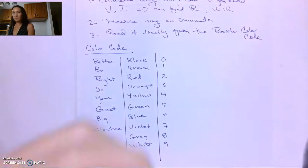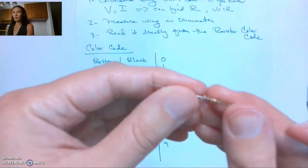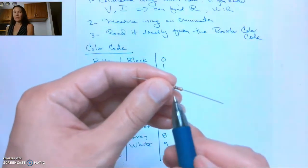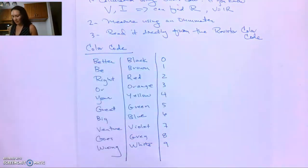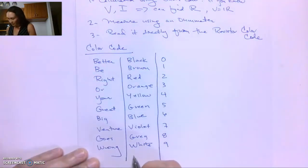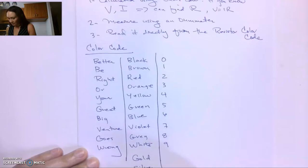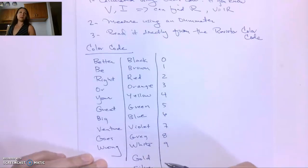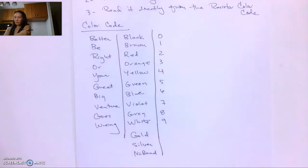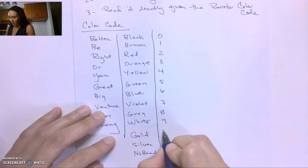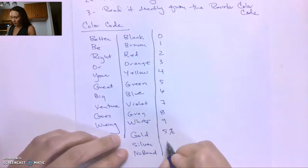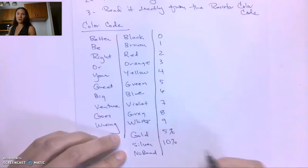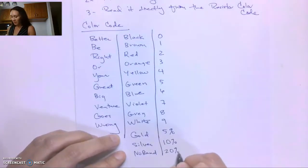That gives us the first three bands of the resistor. The first three are going to be colored bands. You can see this last band is shiny — the last band will be a metallic band, and it will either be gold, silver, or no band. These metallic bands give us the tolerance of the resistance value. Gold corresponds to 5% tolerance, silver is 10% tolerance, and no band is 20% tolerance.